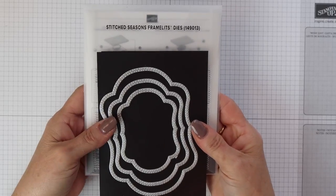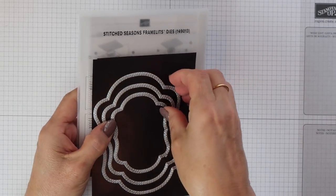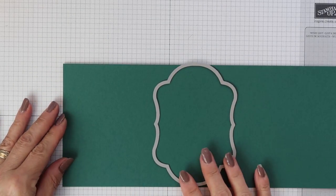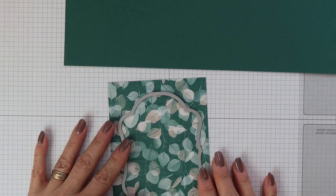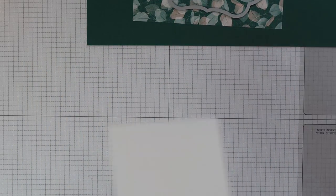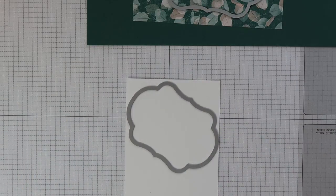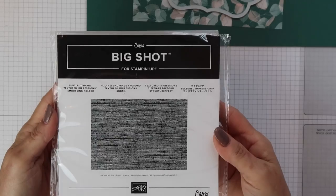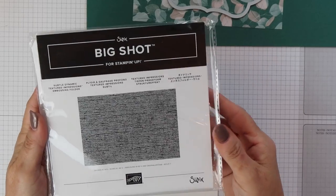And then I have the Stitched Seasons Framelit dies and I'm going to use the largest of them to cut out two Tranquil Tide mats. I also used the same die to cut out some of the Designer Series paper, but I didn't actually use this in the end. Then I'm going to use the middle size of those dies and I'm going to cut a white mat and then I'll run that through the Big Shot with the Subtles embossing folder.